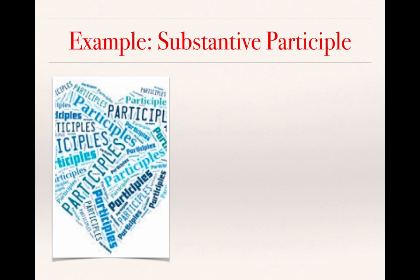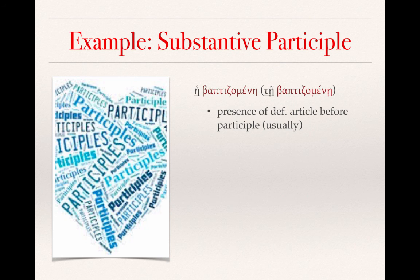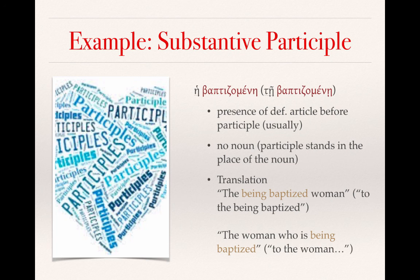For the substantive participle: he-baptit-somene, or in a different case, te-baptit-somene. We see the presence of the definite article before the participle, but in this case there is no noun — the participle stands in place of the noun. We see the 'men' infix indicating the middle or passive voice. This would be translated as 'the being-baptized woman,' or 'to the being-baptized woman' in the dative case, or 'the woman who is being baptized.' We have to supply some things in English that are implicit to the Greek forms.